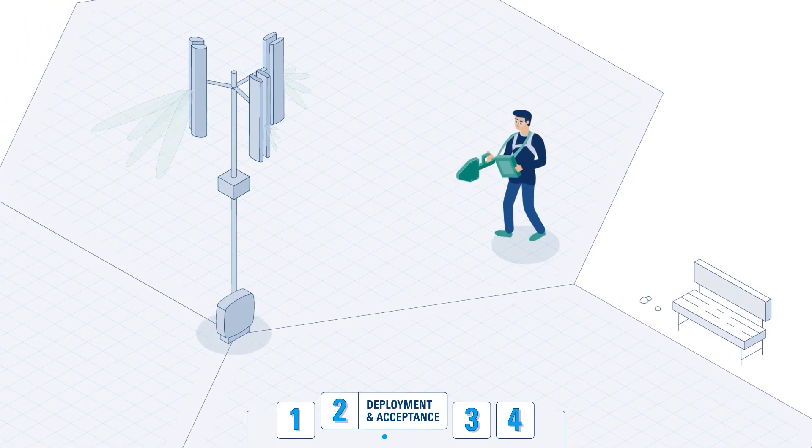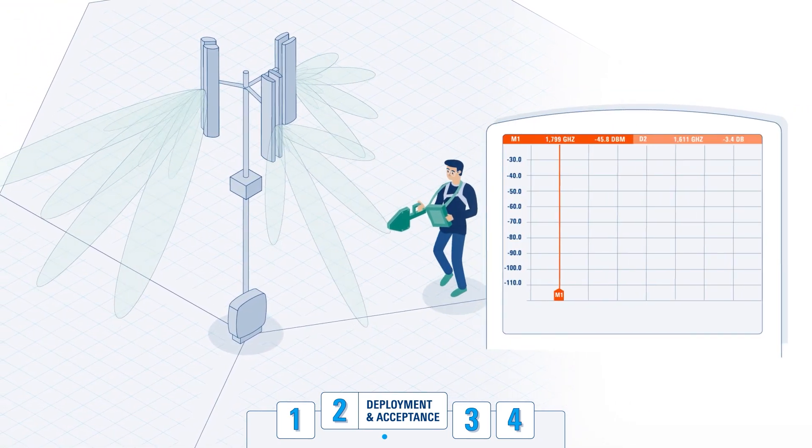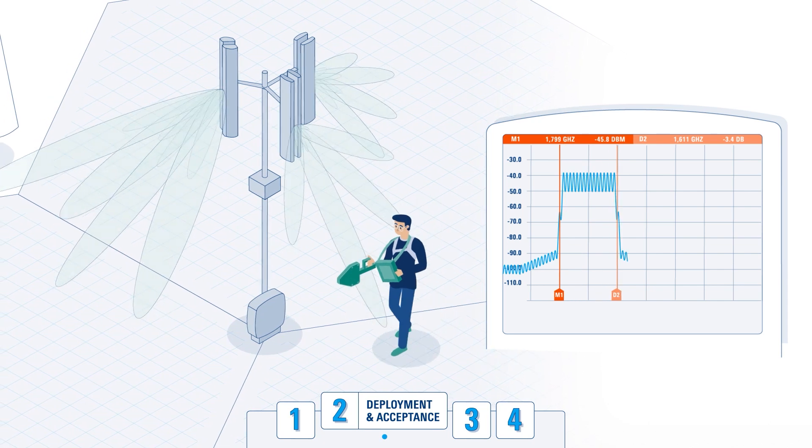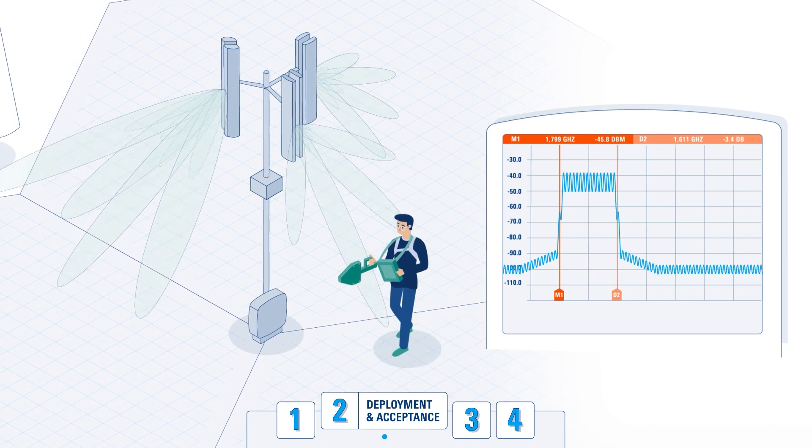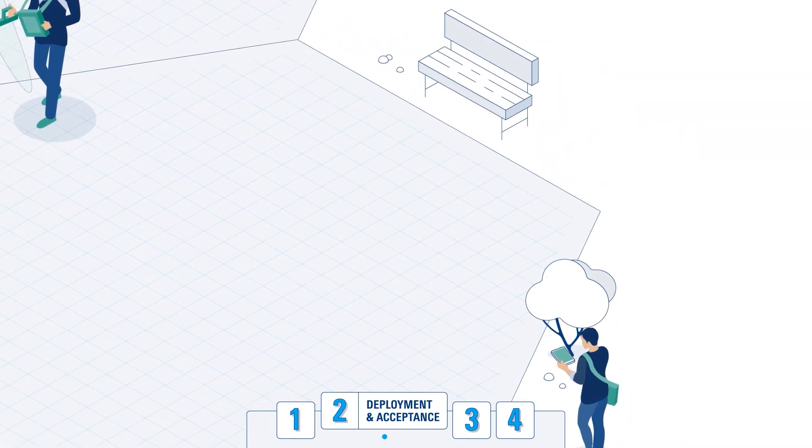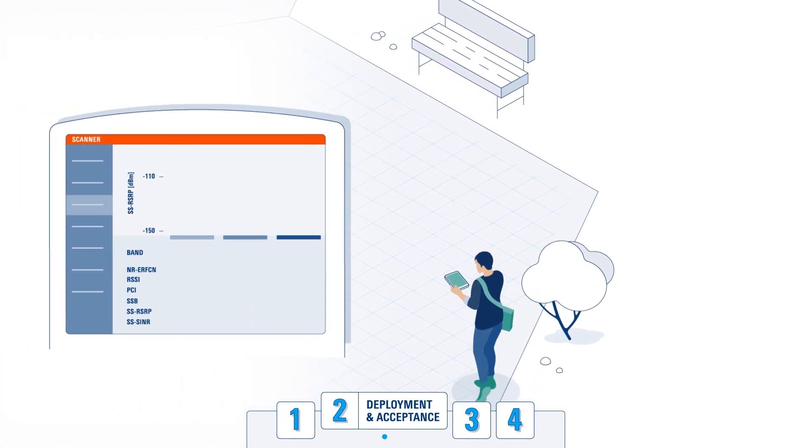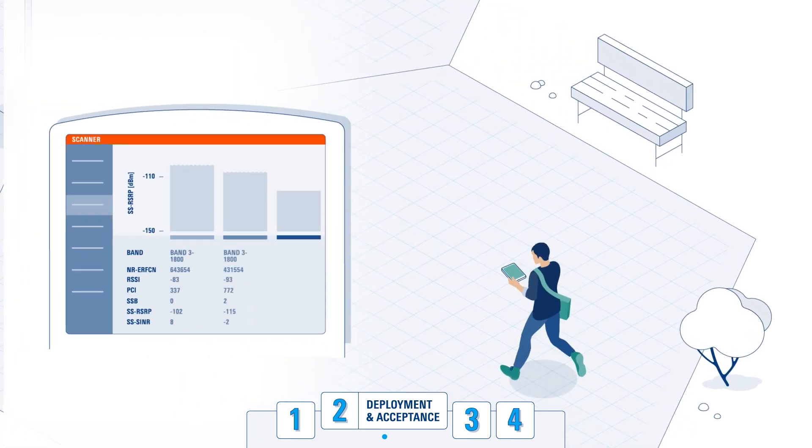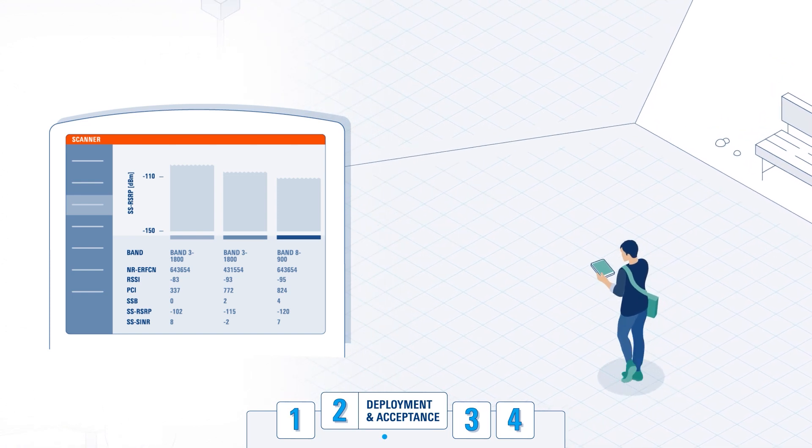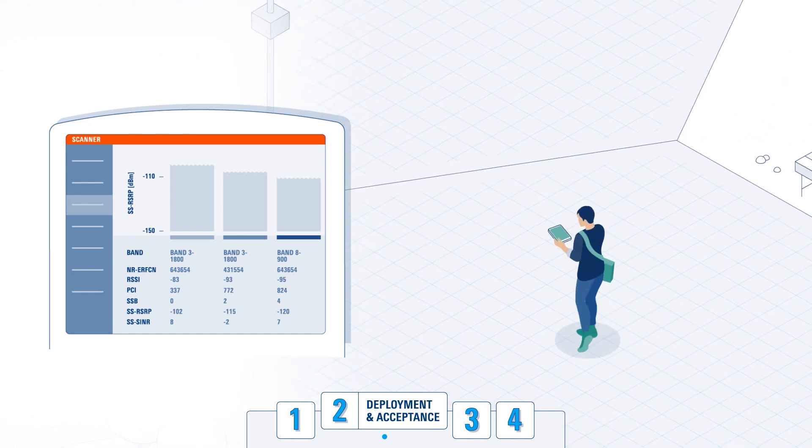The GNODE-B transmission in the time and frequency domain is visualized using 5G over-the-air spectrum measurements. Using a decoding receiver, the 5G and LTE anchor signals can be analyzed in more detail, including the presence and quality of RSRP and SINR.